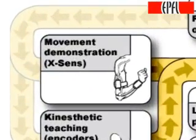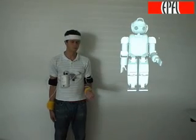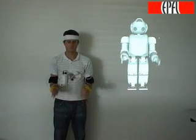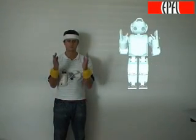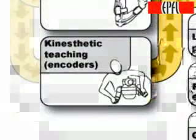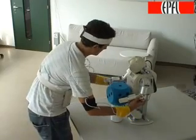We consider different teaching modalities. Firstly, the user performs a demonstration of a gesture while wearing motion sensors recording his upper body movements. Secondly, the user corrects the movement by moving the limbs of the robot to their correct postures through time.